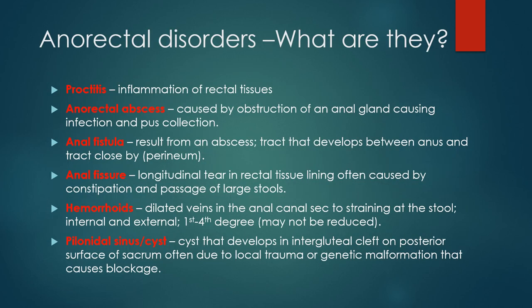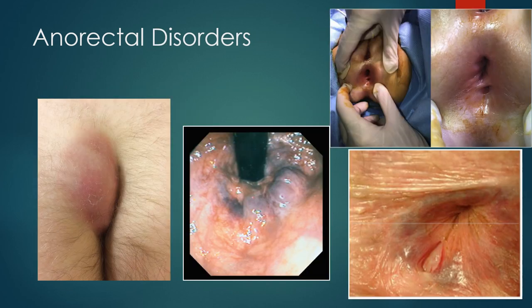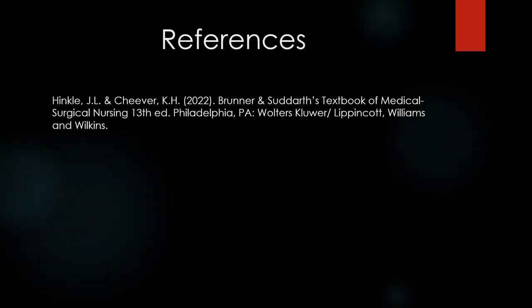Lastly, anorectal disorders — here are some anorectal disorders and their definitions. Some of these are sometimes seen with inflammatory bowel disease like ulcerative colitis or Crohn's disease. There are also some pictures included at the end. That is it! I will see you in class, and if you have any questions about this lecture in particular just send me an email.